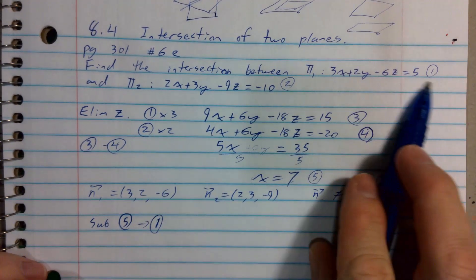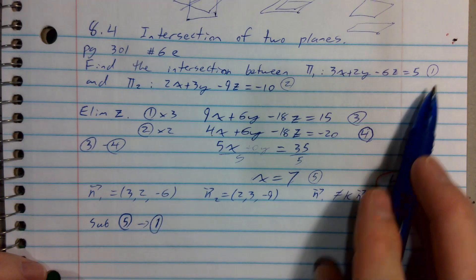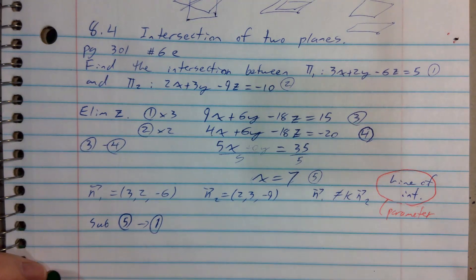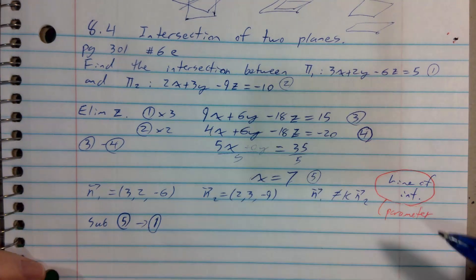Equation 1 has to be true for the intersection to exist, but equation 5 also has to be true. It comes from the truth, dependent on the truth of 3 and 4, which came from the truth of 1 and 2.